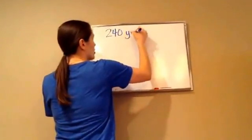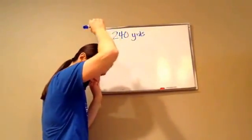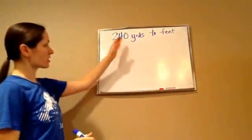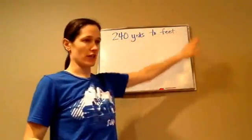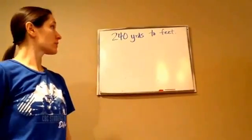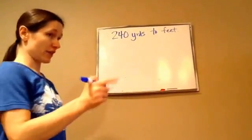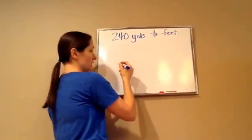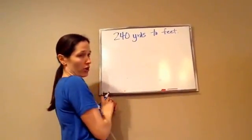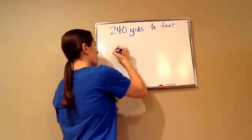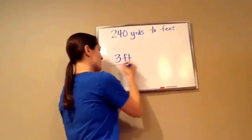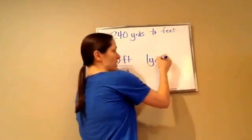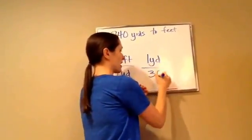240 yards — they're wanting us to convert that to feet. Let's do yards to feet and then feet to yards. How many feet are in a yard? 3. So 3 feet is the same thing as 1 yard — that's the unit multiplier. And then I write the opposite: 1 yard is the same thing as 3 feet.